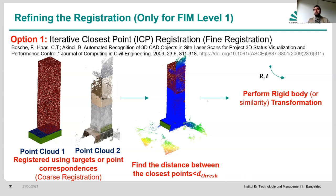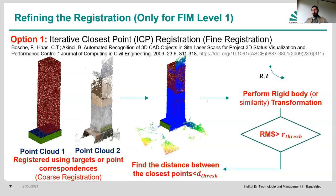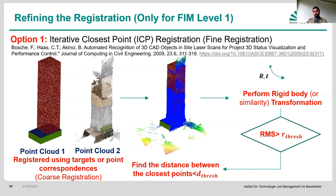We perform a rigid body transformation, or a similarity transformation if we want scale as an additional degree of freedom. Then, if the RMS of the final rigid body transformation is more than your desired threshold, you go back and do it again. The RMS is the root mean square — essentially an average of the distances between the first and second scanner after performing the rigid body transformation.